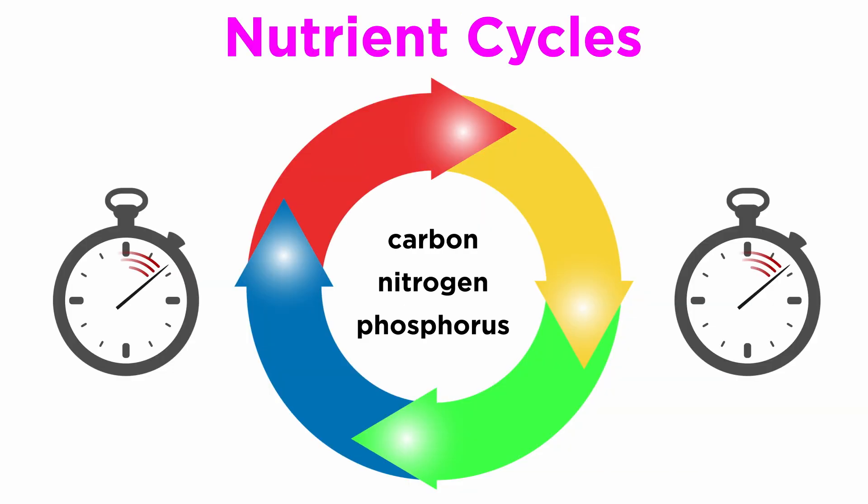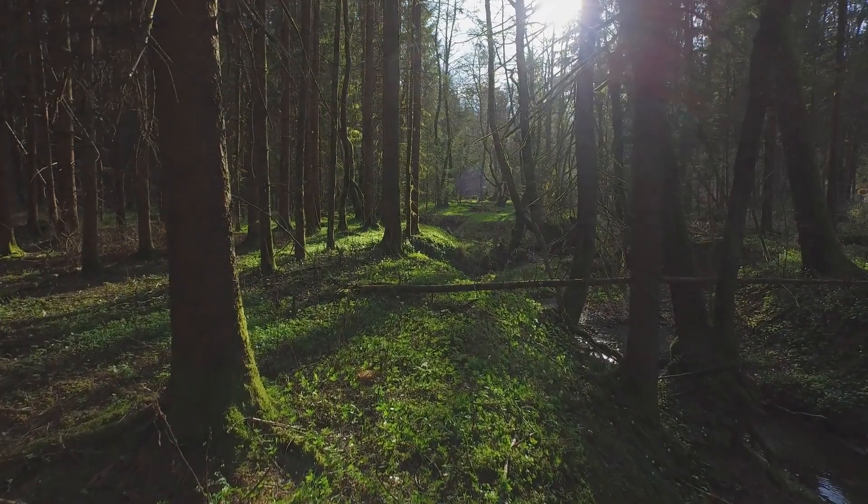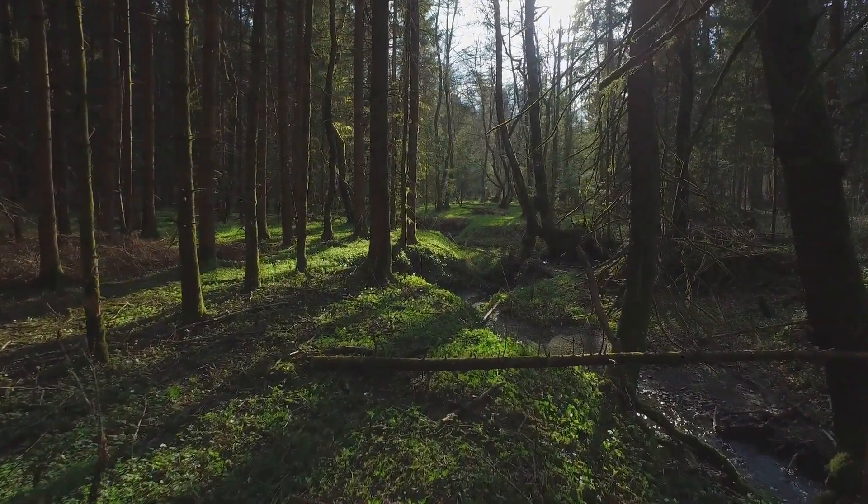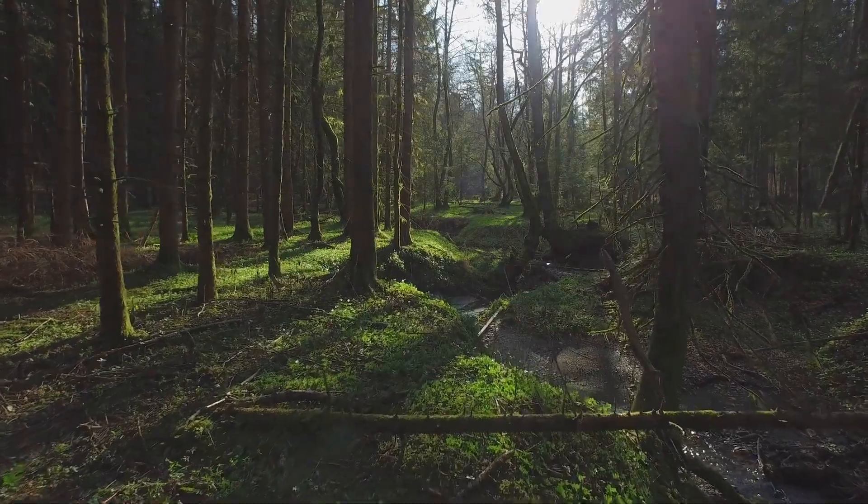The rate of nutrient cycling can affect how rapidly nutrients are made available to the ecosystem again. Overall, cycling of decomposed matter and nutrient cycling are what allow ecosystems to be self-sustaining.